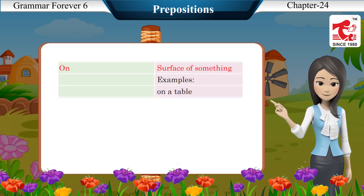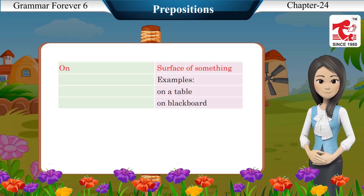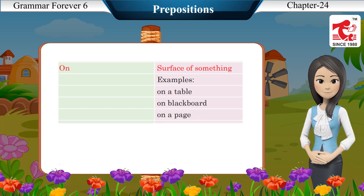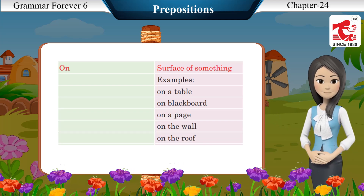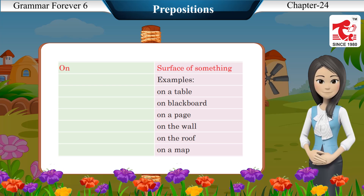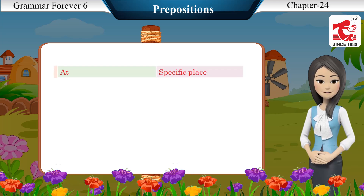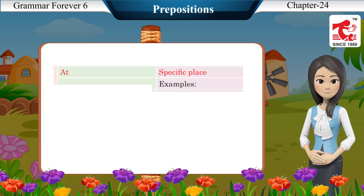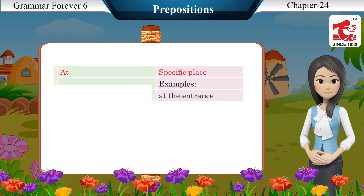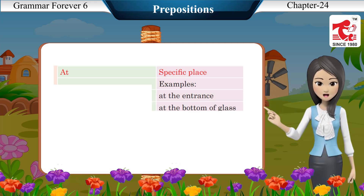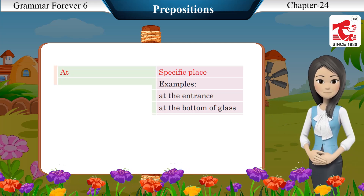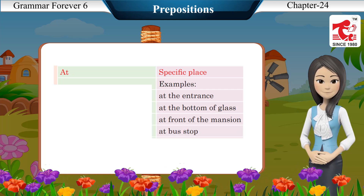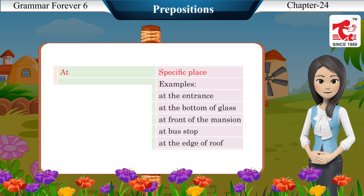Examples of 'on' for surface: on a table, on the blackboard, on a page, on the wall, on the roof, on a map. Examples of 'at' for specific place: at the entrance, at the bottom of the glass, at the front of the mansion, at the bus stop, at the edge of the roof.